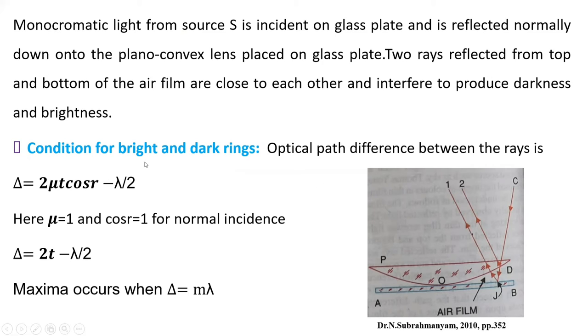So we will see conditions for bright and dark rings. So optical path difference between these two rays is Δ = 2μt cos r - λ/2. Here μ = 1 and cos r = 1 for normal incidence.